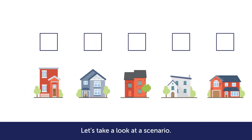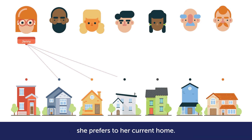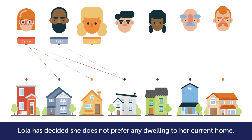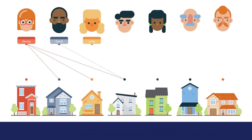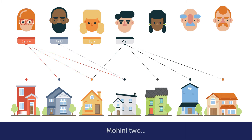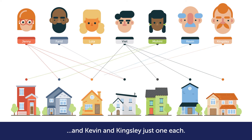Let's take a look at a scenario. In this round, Jenny has nominated three properties she prefers to her current home. Varid only one. Lola has decided she does not prefer any dwelling to her current home. Viet has listed four properties. Mahini two, and Kevin and Kingsley just one each.